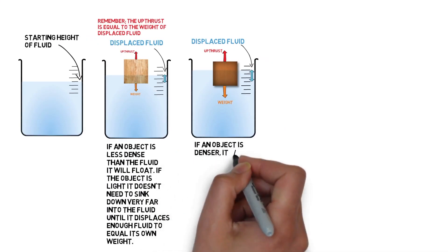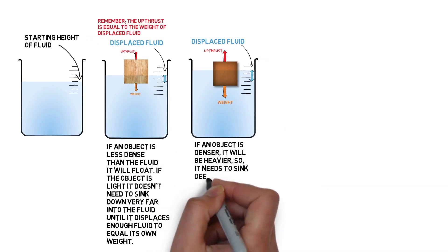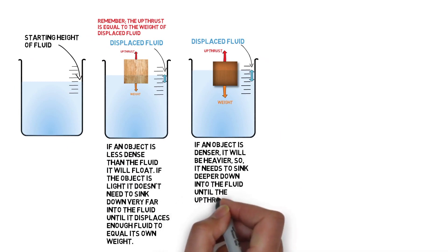If an object is denser, it will be heavier, so it needs to sink deeper down into the fluid until the upthrust is big enough to equal the weight of the object.